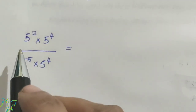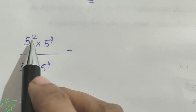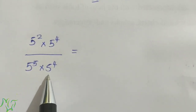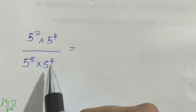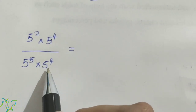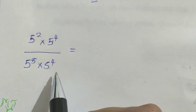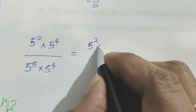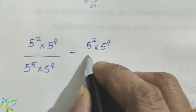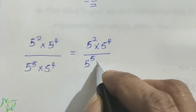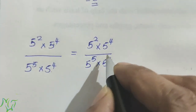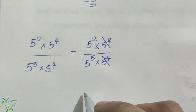Next problem: 5 squared into 5 raised to 4, by 5 raised to 5 into 5 raised to 4. We can see 5 raised to 4 in the numerator and also in the denominator, so we can cancel them. After cancelling 5 raised to 4, we are left with 5 squared by 5 raised to 5.